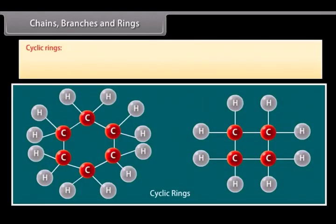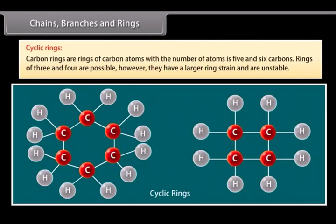Cyclic rings. Carbon rings are rings of carbon atoms. The number of atoms to form a ring is five and six carbons. Rings of three and four are possible. However, they have a larger ring strain and are unstable.